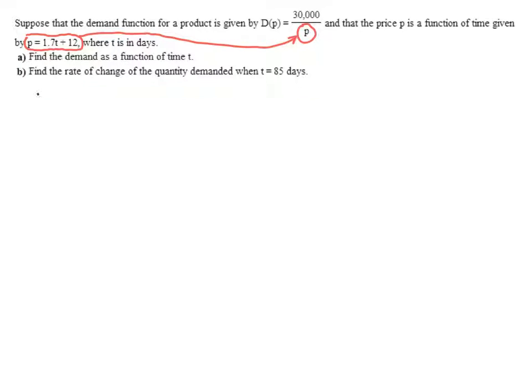So D of p is just going to be D of 1.7t plus 12, which will be 30,000 divided by 1.7t plus 12. That's all we're asking for in part a, is for you to substitute the one function into the other function. So part a is done.